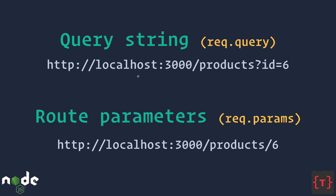Whenever you go to a website and you have a URL like localhost port 3000 slash products with a question mark id equal to six, the query string is the part after the question mark. From this query string we can extract key-value pairs — here we have a single key-value pair: id equal to six.